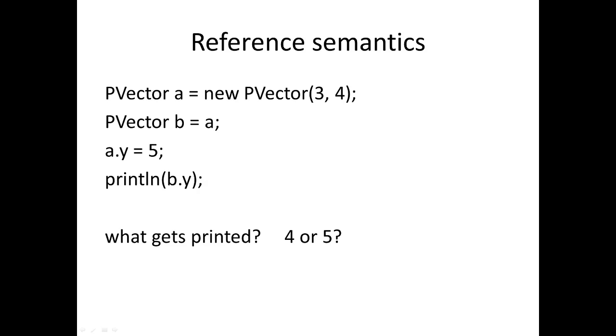Now let's do this again, and this time a and b will be PVectors. So a starts off as a PVector with components 3 and 4, then a is assigned to b. Now we change the y component of a and then we print out the corresponding y component of b. And again, our question is just the same: do we get a 4 or a 5 printed out?